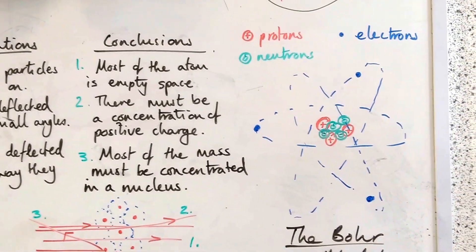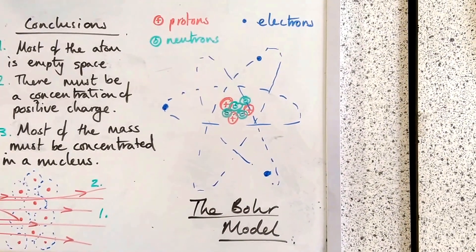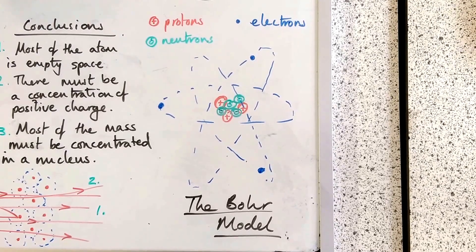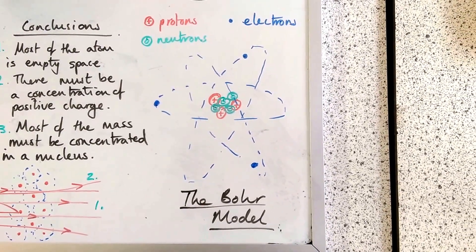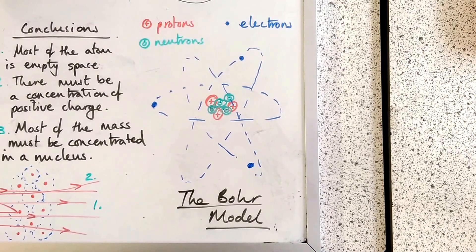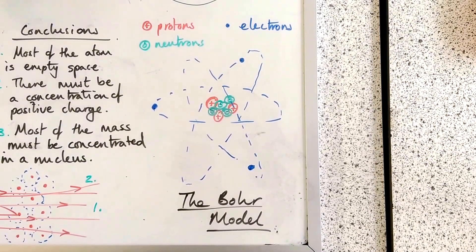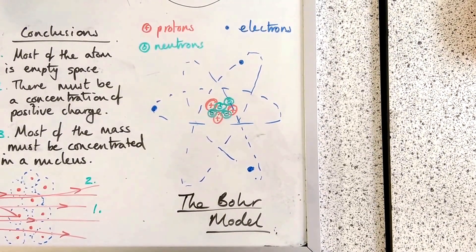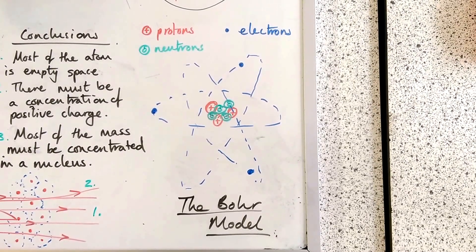This and some other experiments led to the development of the Bohr model. The Bohr model is the most accepted model of the atom today. It states that all the positive charge is located in a nucleus, and that these are because of positive particles called protons.